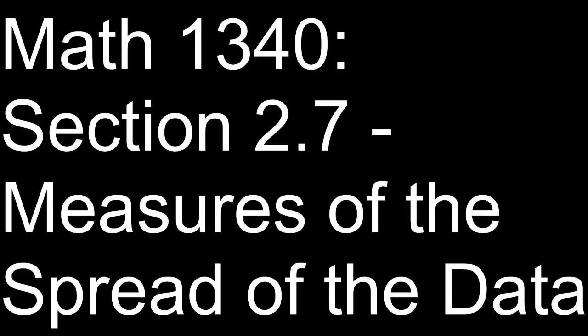We're going to see some values called the variance and the standard deviation. The lower those values are, the closer the data is, the more tightly packed, the more consistent. The larger those values are, the more far apart, the less concentrated the data will be.